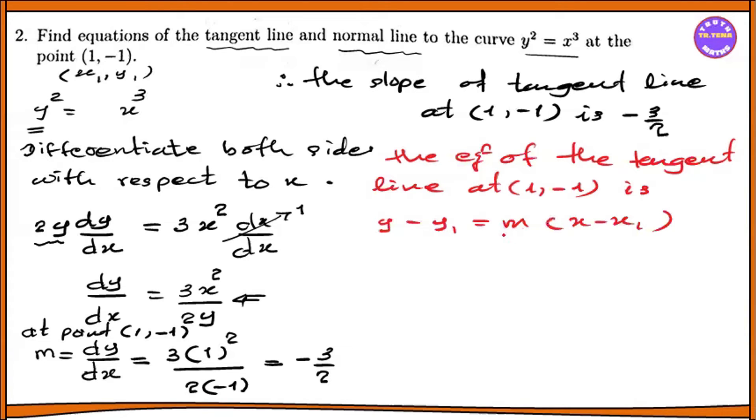So y minus (-1) equals minus 3/2 times (x minus 1). That becomes y plus 1 equals minus 3/2 times x plus 3/2. Then y equals minus 3/2 x plus 3/2 minus 1.